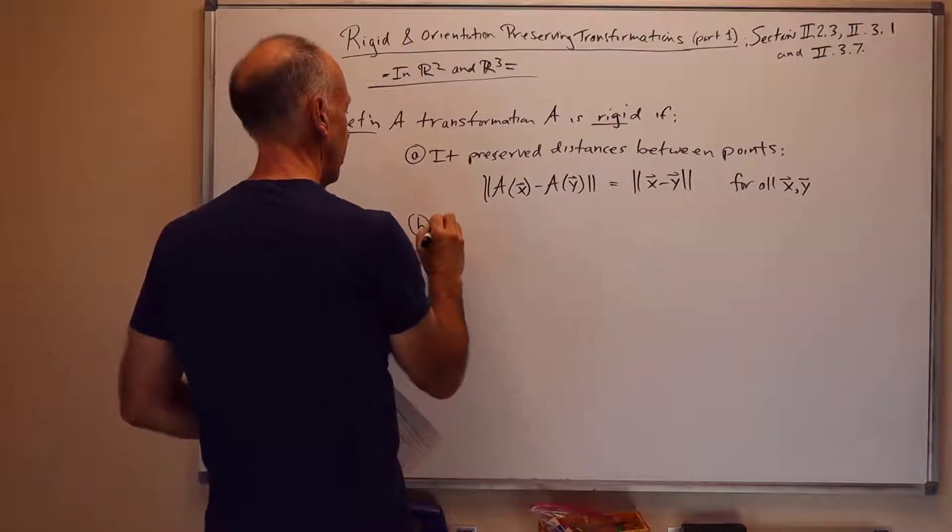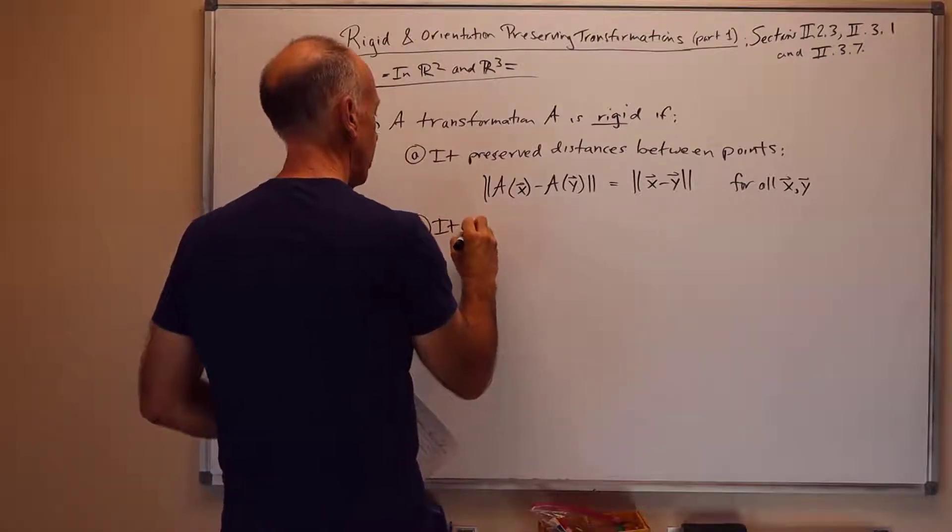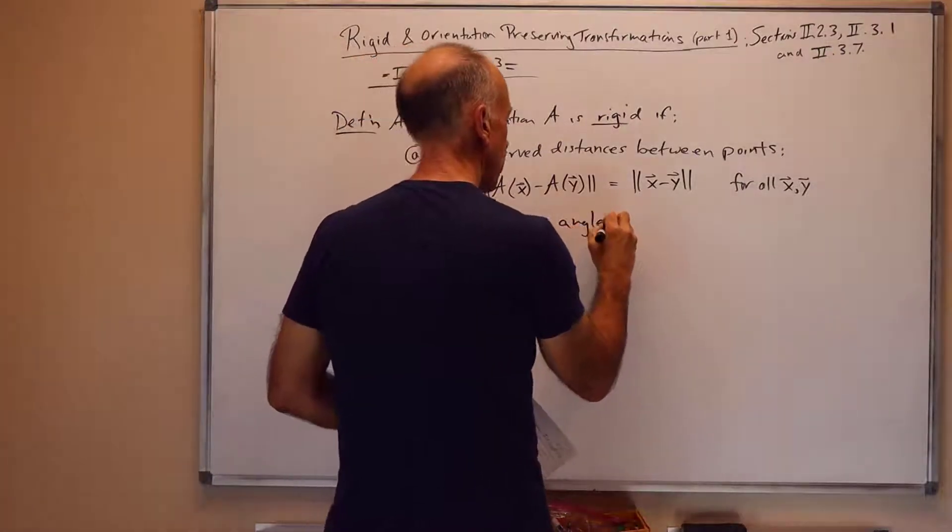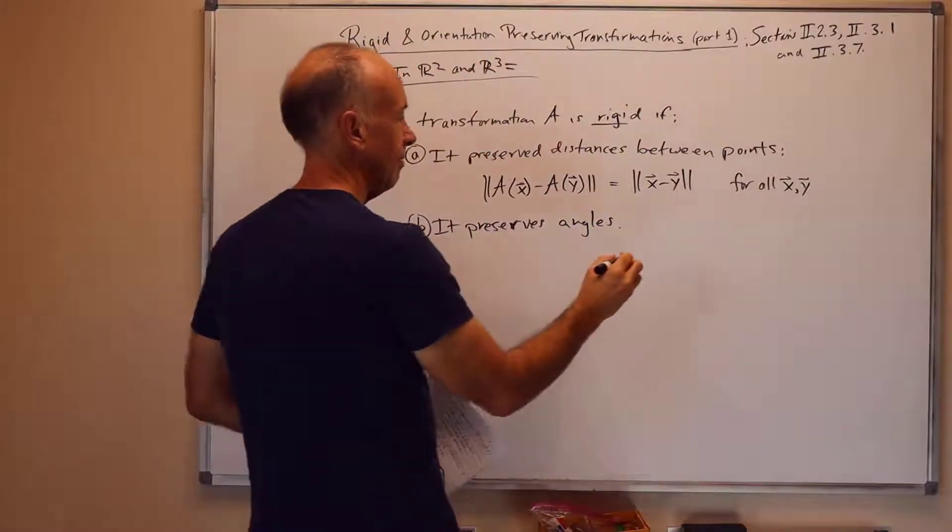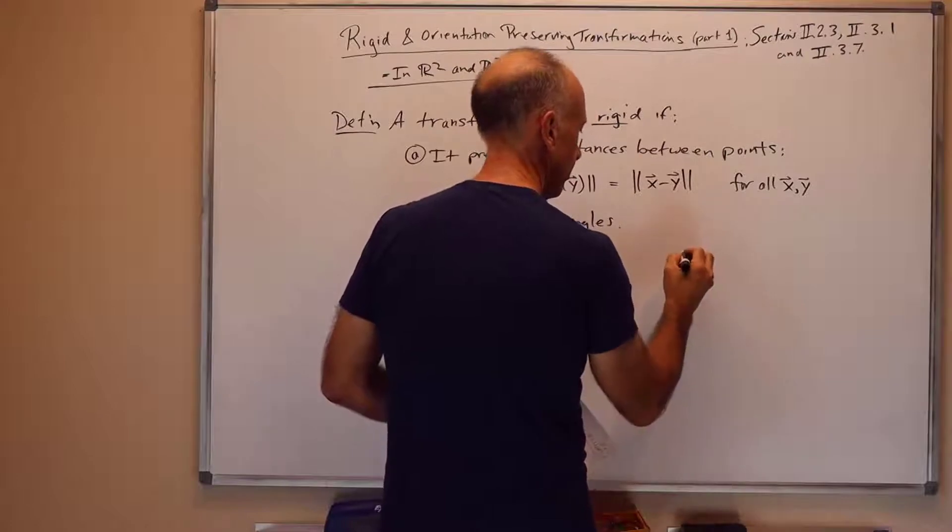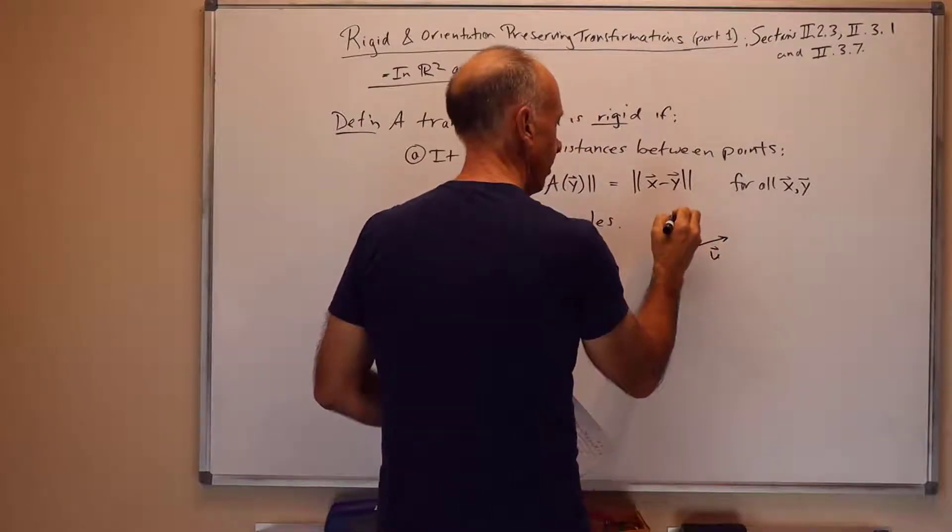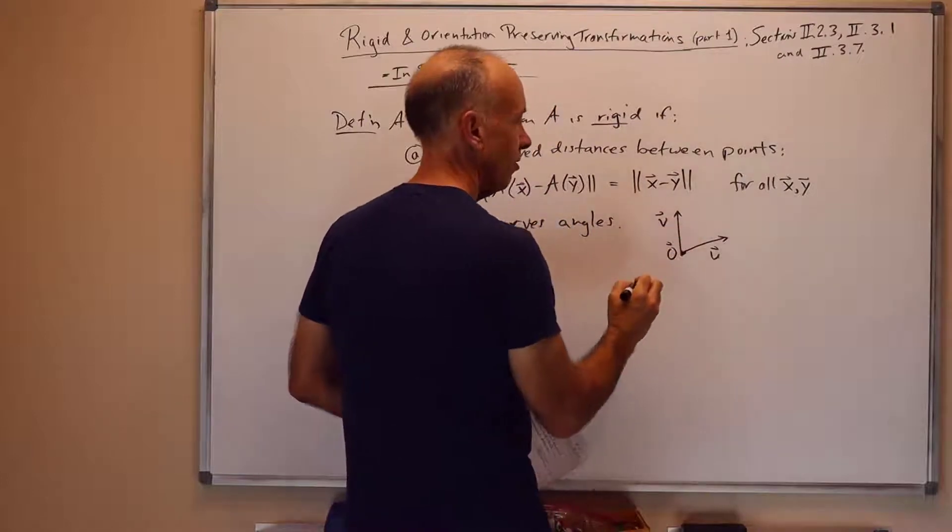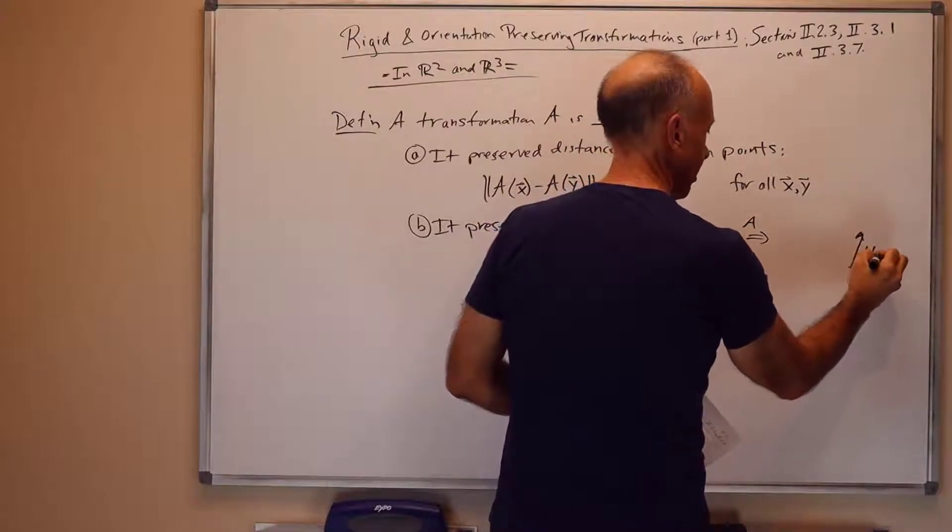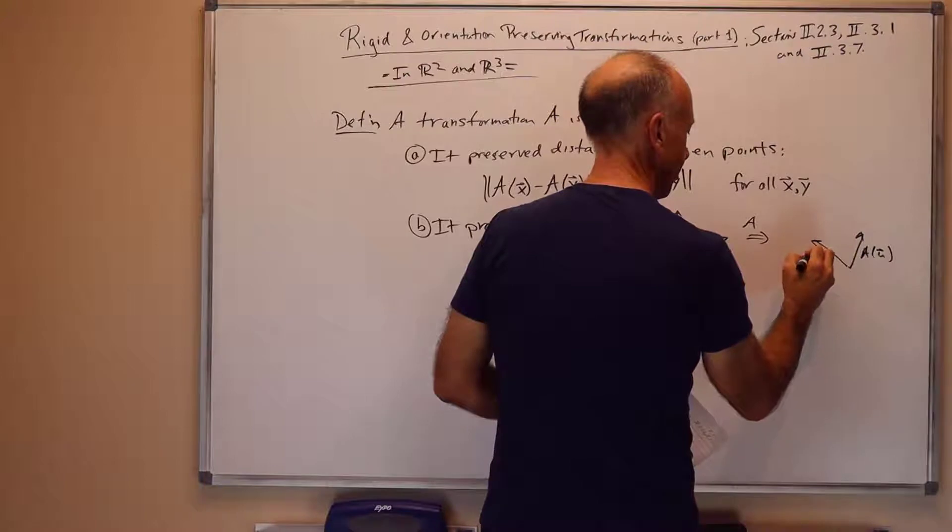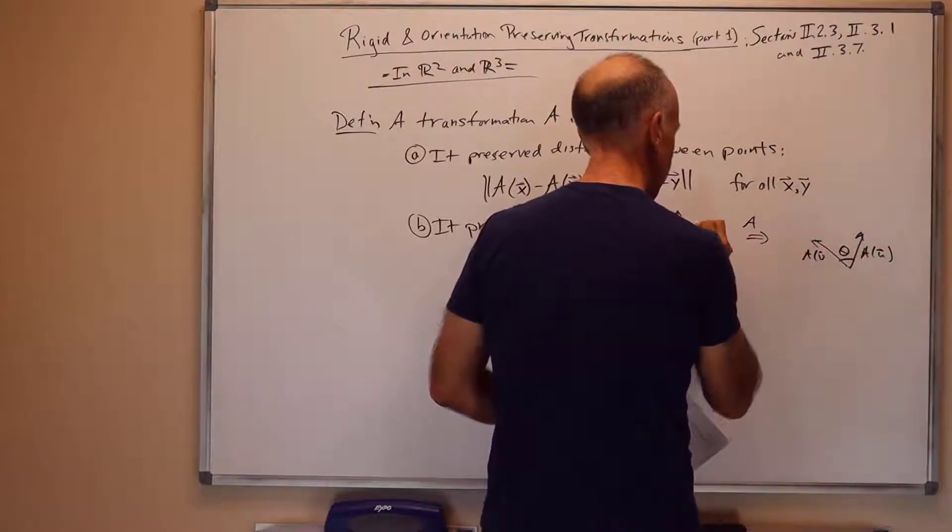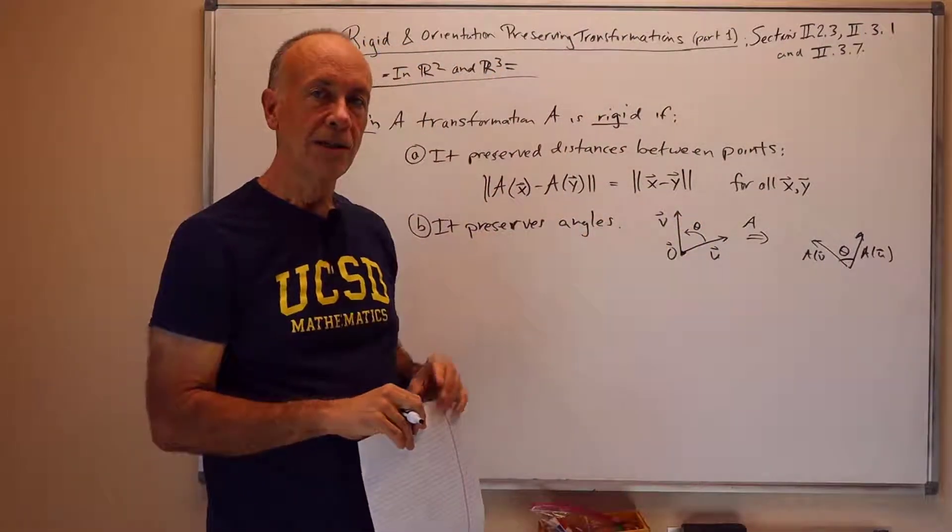And secondly, it preserves angles between vectors or between lines. What I mean by this is that if I've got a vector u and a vector v, both rooted at the origin, say, and map them by A and we get some new vector A of u and a new vector A of v, that the angle between the two vectors is the same before and after the transformation A has been applied.